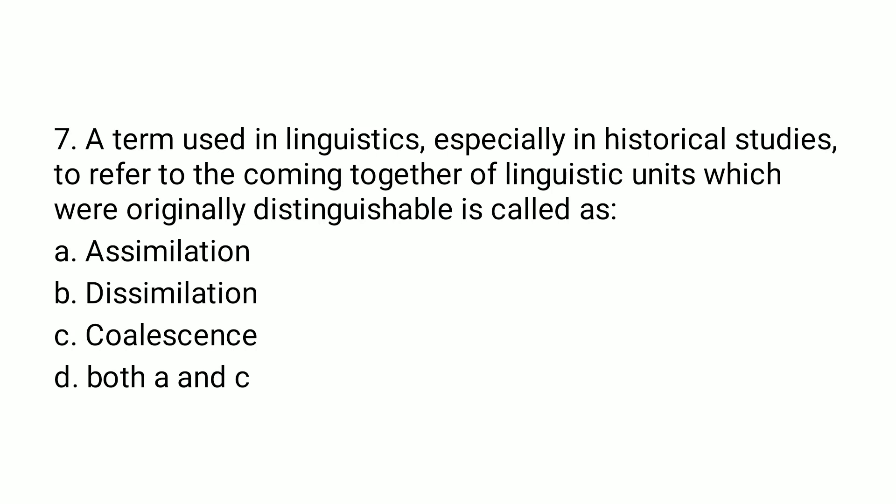The seventh question asks about a term used in linguistics, especially in historical studies, to refer to the coming together of linguistic units which were originally distinguishable. This process is known as coalescence. For example, 'zh' and 'ya' come together to become 'ja', as in the word 'occasion'.